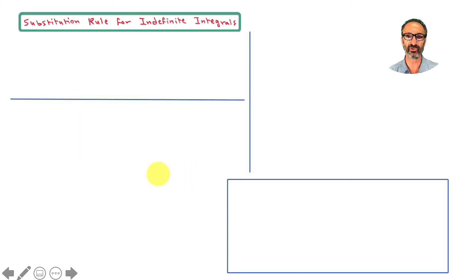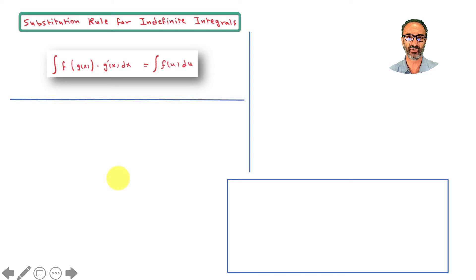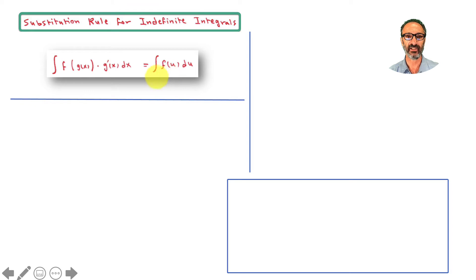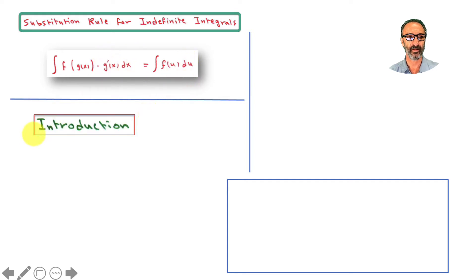Here is the formula for the substitution rule for indefinite integrals: the integral of f of g of x times g prime of x dx. We'll call the inner expression u, so this becomes the integral of f of u du — just to make the writing simpler.